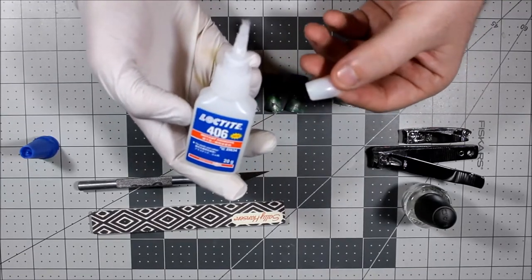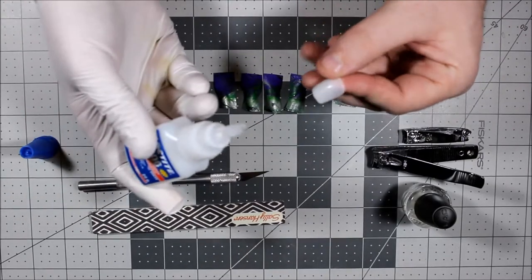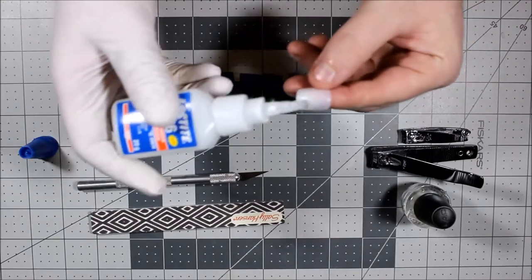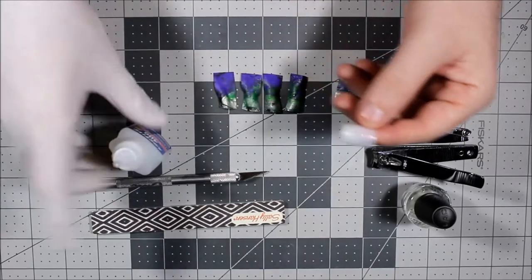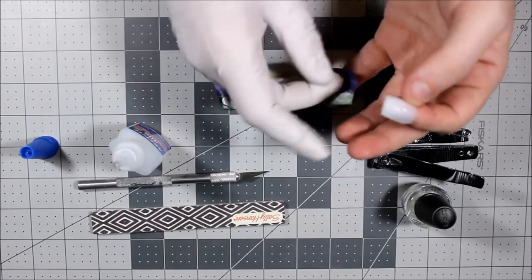I have some Loctite 406. It's an industrial strength super glue created specifically for use with plastics, and acrylic is a type of plastic. And I know this sets quickly, so I'm going to try and get this done as fast as possible before the glue dries.